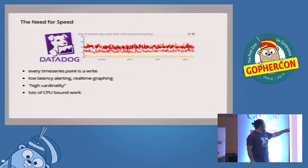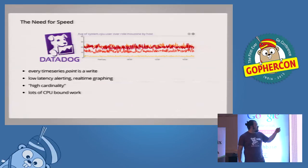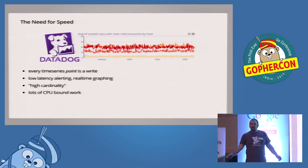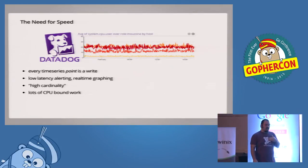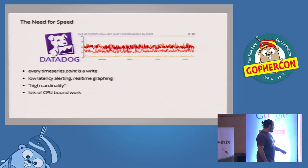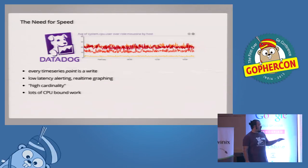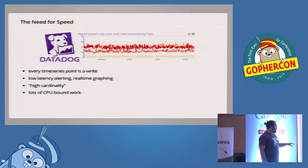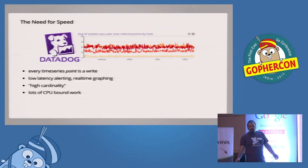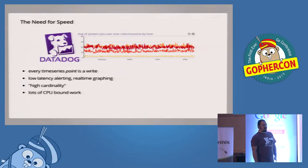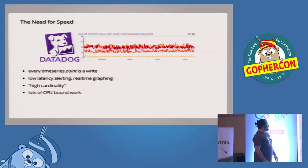At Datadog we get a lot of metrics from our customers and present them with pretty charts. Anyone who knows about time series data knows there are lots of rollups, lots of aggregations — time aggregations, space aggregations — all really CPU-intensive work. There's a high IO-intensive part as well, but most of that is going into memory. There's a ton of CPU-bound work, and you can really squeeze a lot out once you've written a semantically correct daemon. We've gotten 20 to 30x speed-ups on the naive implementation.